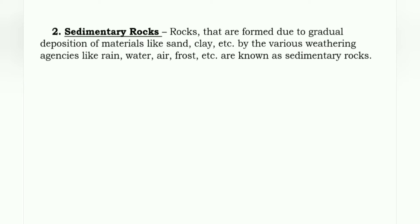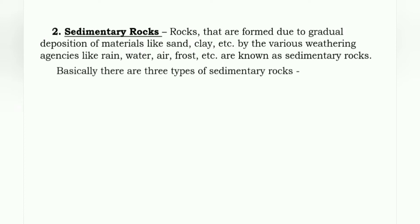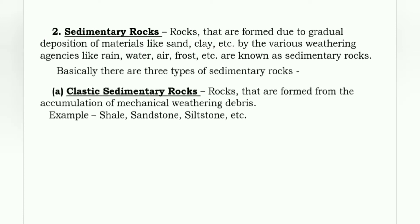Number two, sedimentary rocks: rocks that are formed due to gradual deposition of materials like sand and clay by various weathering agencies like rain, water, air, frost, etc. are known as sedimentary rocks. Basically, there are three types. First is clastic sedimentary rocks: rocks that are formed from the accumulation of mechanical weathering debris are known as clastic sedimentary rocks. Examples: shale, sandstone, siltstone, etc.